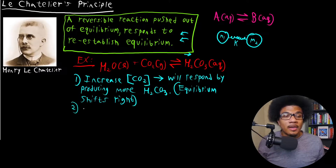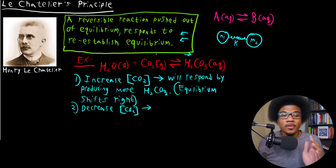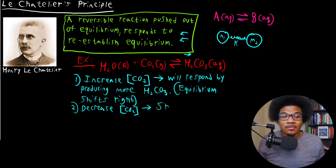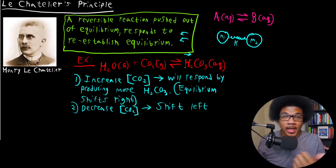Now let's say we decrease the concentration of CO₂ — say we evacuate some CO₂ out of the system. The system will respond by trying to increase the concentration of CO₂, so the equilibrium will shift left. That means it's going to try to create more of the reactant to account for that loss in CO₂ concentration.